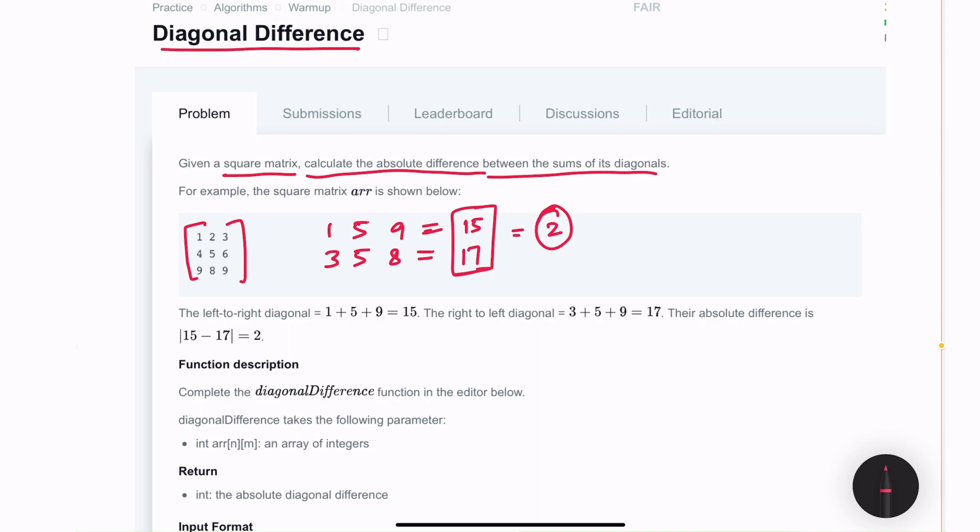As I mentioned earlier, this is an easy problem and should not take much time to understand and solve. Looking at this problem in front of us, if I try to rearrange this formula, it would look something like 1 plus 5 plus 9 minus 3 plus 5 plus 8.